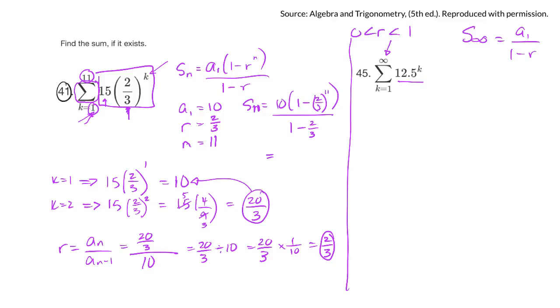Let's try k value of 1. That gives me 12.5 to the first, which is just 12.5. Let's try k value of 2. So it'll be 12.5 squared, that'll be 160. It's a big number.